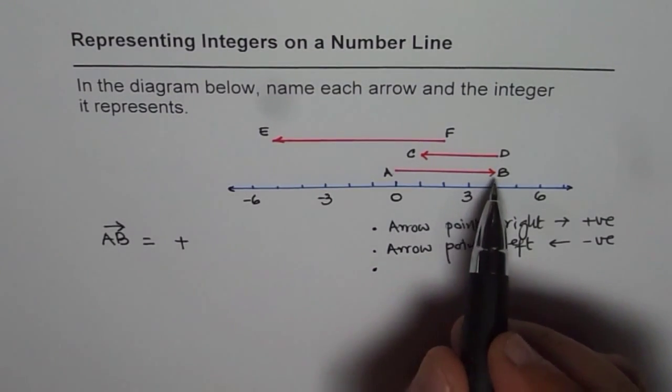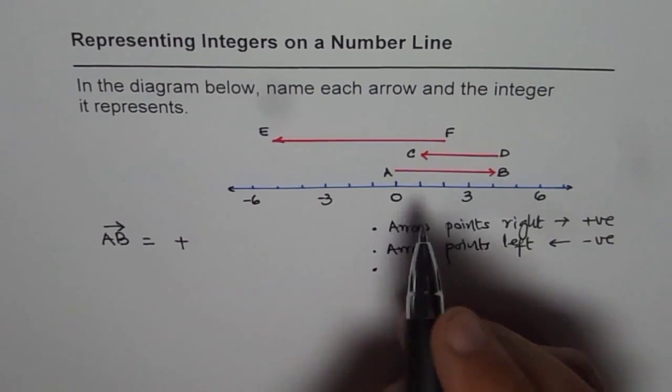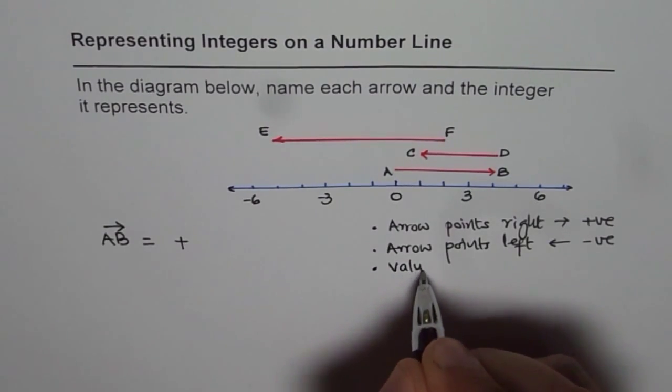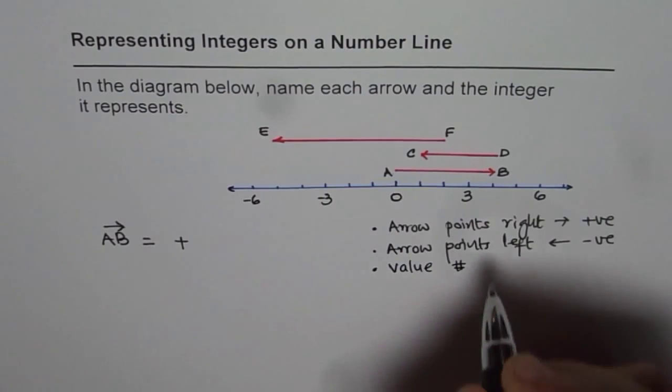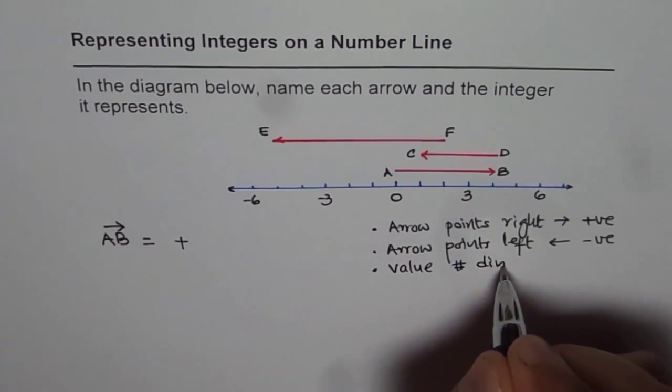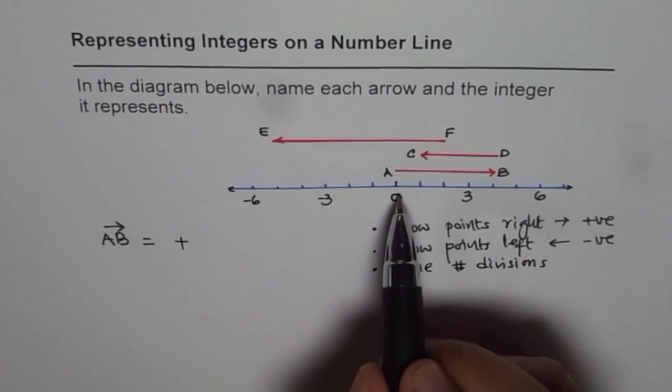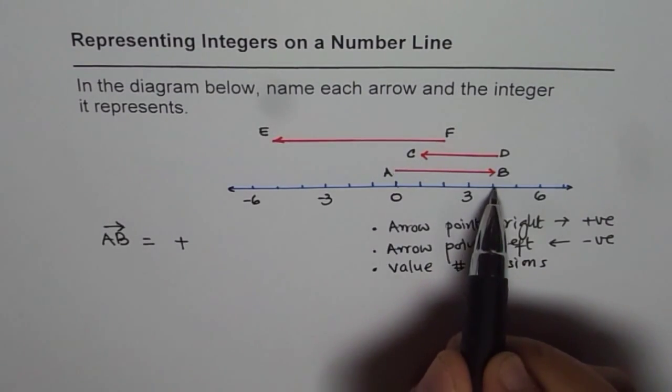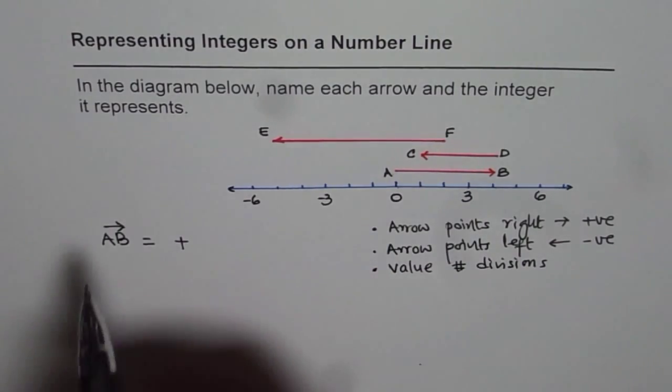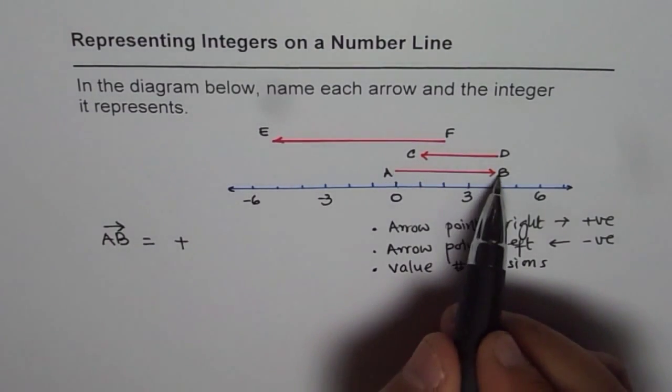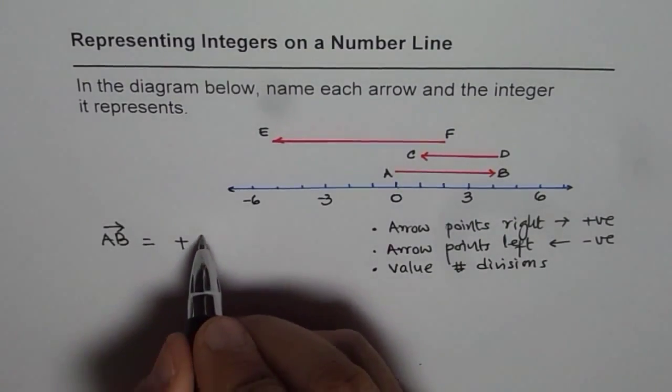Now second part is what is the value of integer. So the value is number of divisions on a number line. So here it is from 0 to 4. 1, 2, 3, and 4. So this A B arrow indicates an integer which should be positive 4.